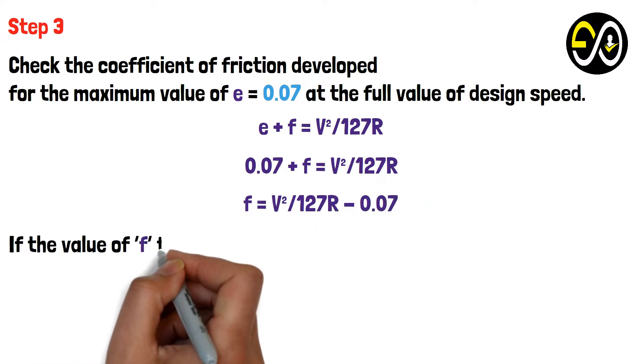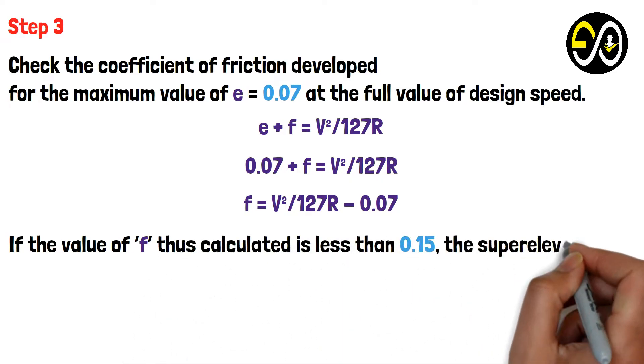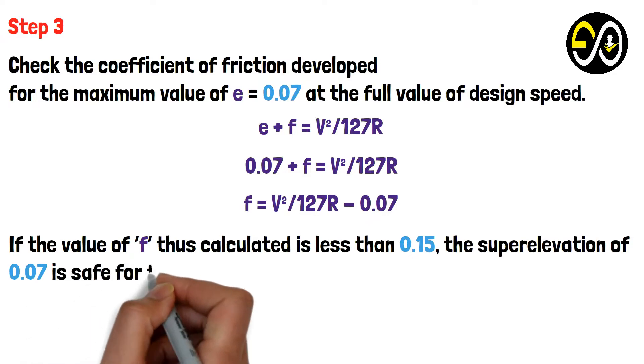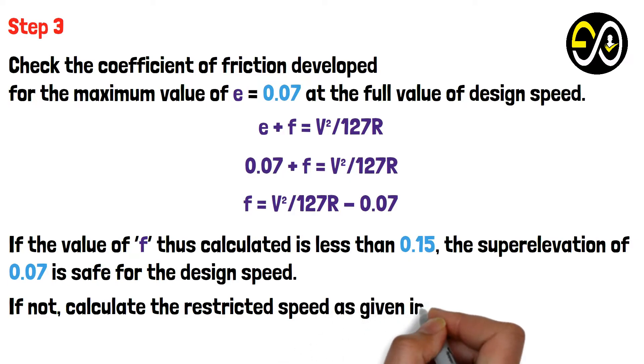If the value of f thus calculated is less than 0.15, the superelevation of 0.07 is safe for the design speed. If not, calculate the restricted speed as given in Step 4.